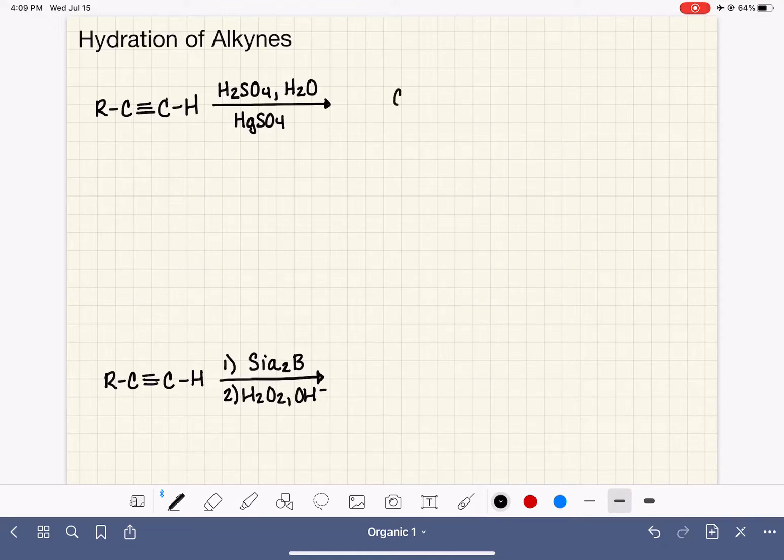So it gives us an alkene because we are adding one water molecule, and it is being done Markovnikov's, meaning that the hydrogen is added to the same carbon that already has a hydrogen present, and our OH group is added out here.